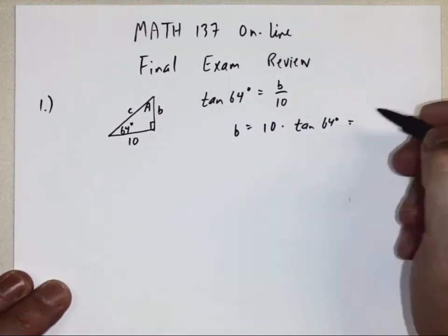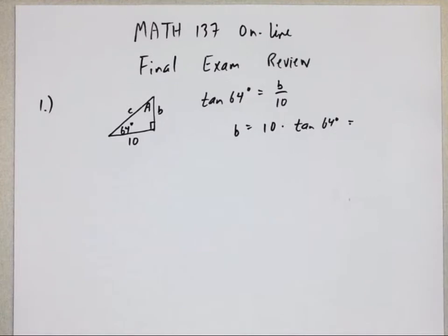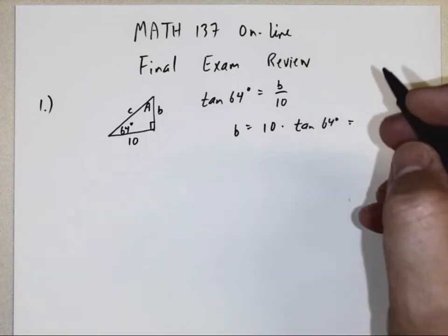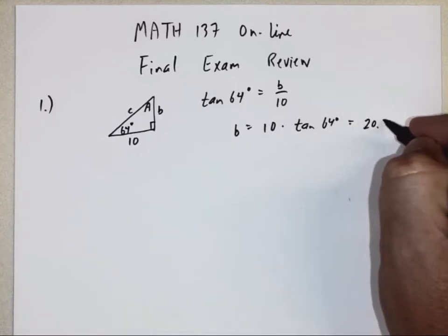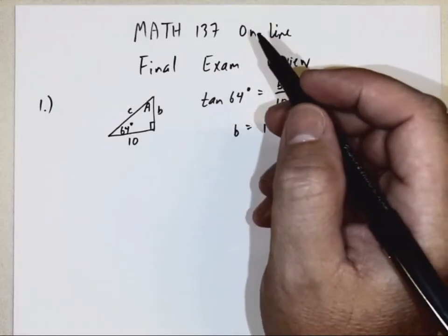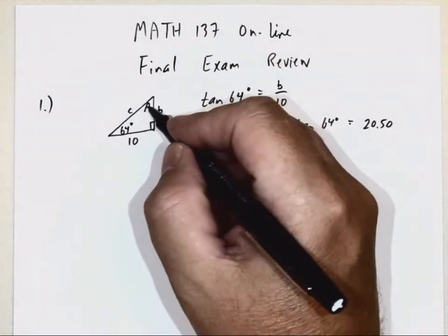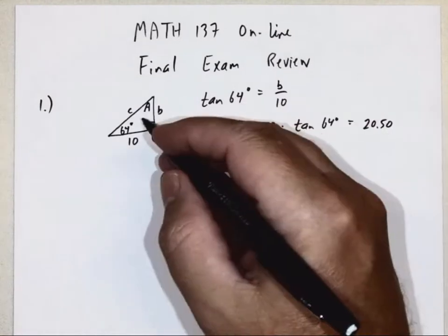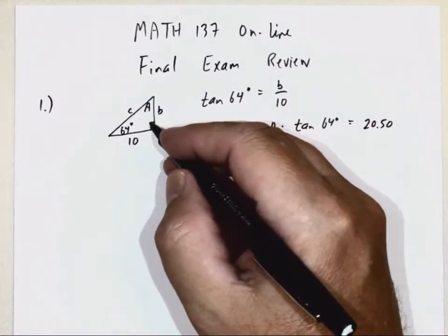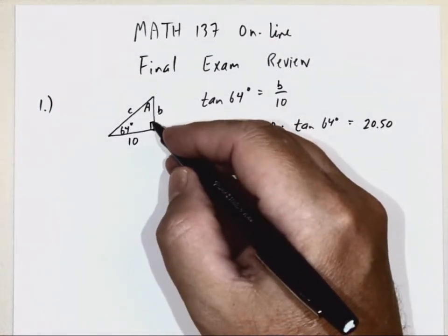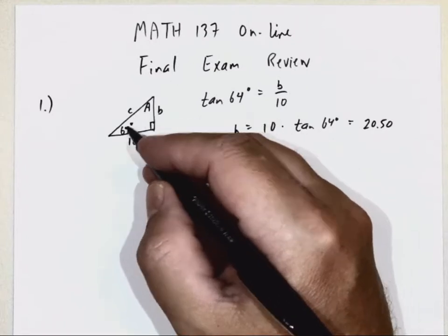All right, so B would be 10 times tangent of 64 degrees. And then the problem says round to the nearest hundredth. So grab your calculator, make sure you're in degree mode. 64 tangent times 10. And round to the hundredth should be 20.50. Now, actually angle A is pretty easy. I could have done that first of all. Why is that?